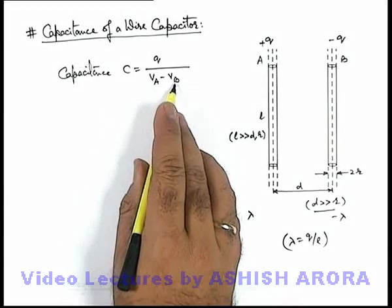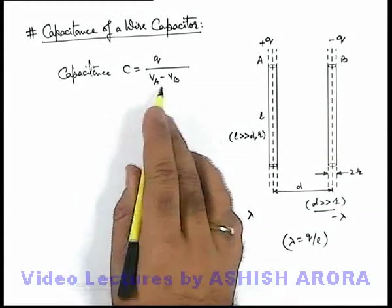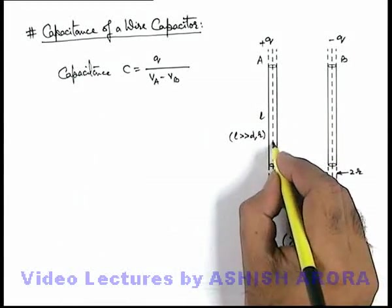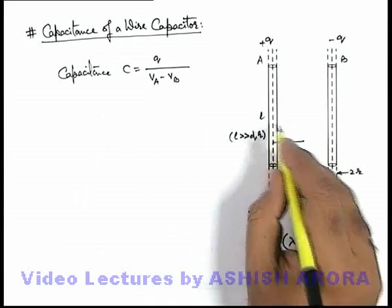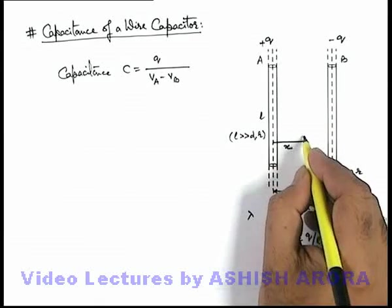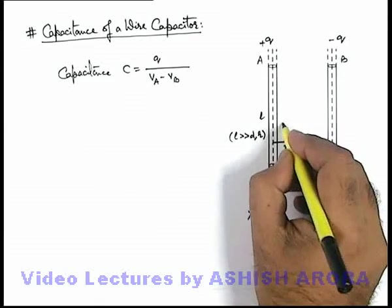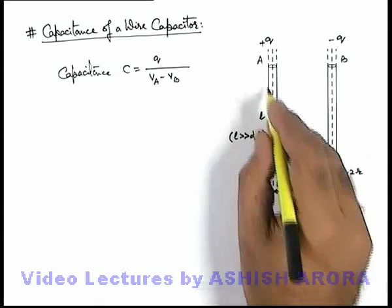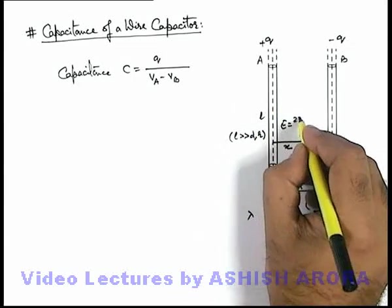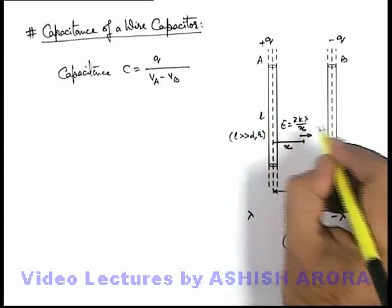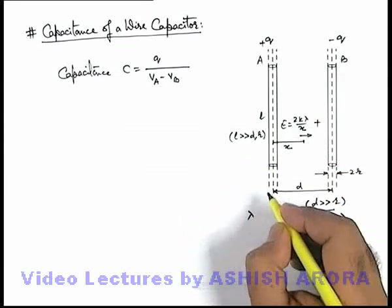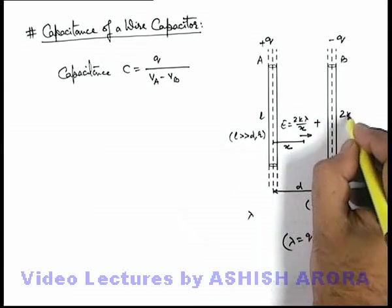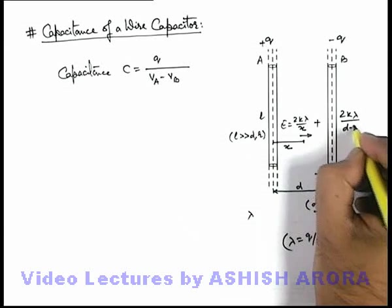And in this situation this potential difference we can calculate by using the electric field at a distance x from the axis of the positively charged wire. If this electric field, we can easily calculate the value. Due to this positive lambda it will be 2k lambda by x, and due to the negative also it will be in same direction, then it will be plus 2k lambda by d minus x.